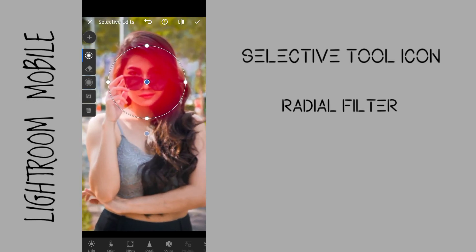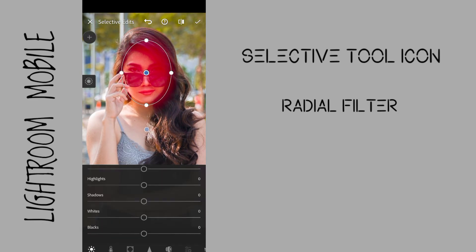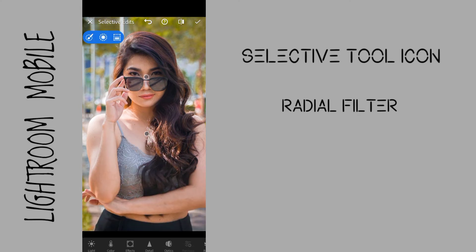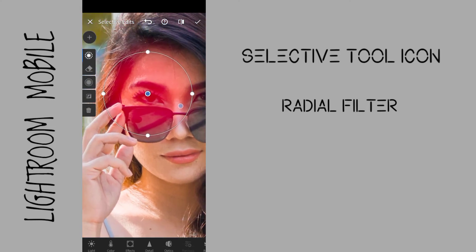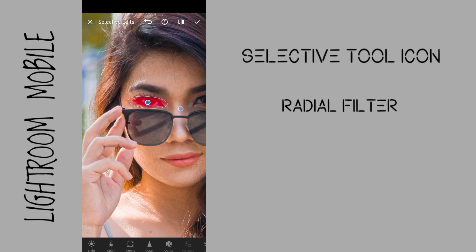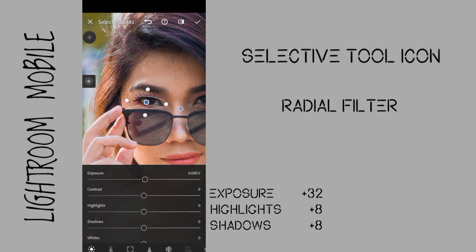Add another radial filter and bring it to her face. Adjust the exposure to plus 24 to brighten the face. Add another radial filter and bring it to the eye. Adjust the exposure to plus 32, highlights to plus 8, and shadows to plus 8 to brighten the eyes. Then duplicate the radial filter to the other eye.